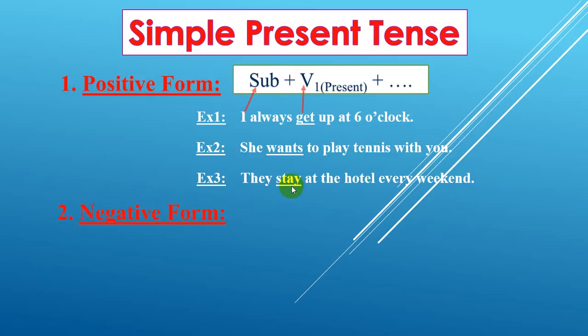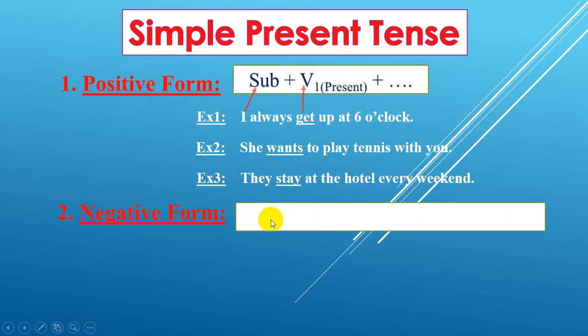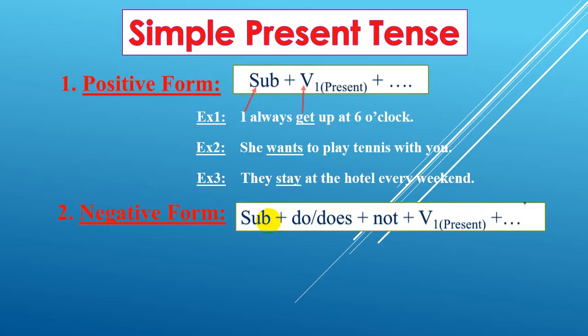Okay, so the negative form: we have subject plus do or does plus not, plus verb one, plus the rest.